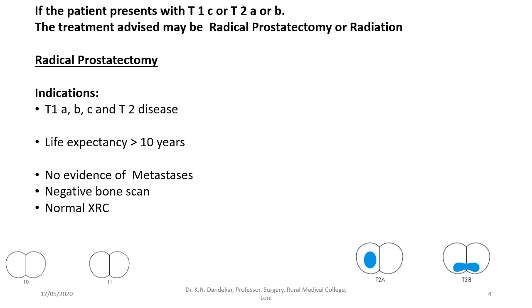Which patients are indicated for radical prostatectomy? Patients with T1A, T1B, T1C and T2 disease who are young and fit with a life expectancy more than 10 years. Make sure there is no evidence of metastasis, proven with a negative bone scan as well as a normal chest x-ray.